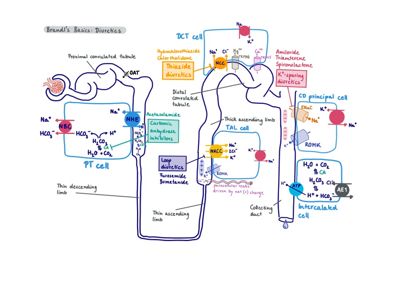The last predictable adverse effect is the effect on uric acid. Having too much uric acid is problematic because it can lead to gout. All diuretics need to get into the tubular fluid to act on their respective transporters. They all enter the tubular fluid via a transporter called OAT — the organic anion transporter. Uric acid is also an anion transported via OAT, so diuretics compete with uric acid for this transporter, resulting in higher uric acid levels.